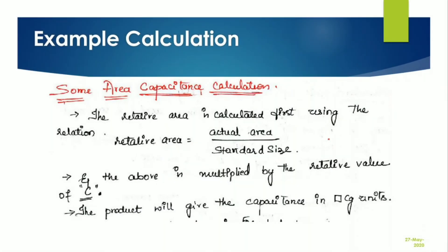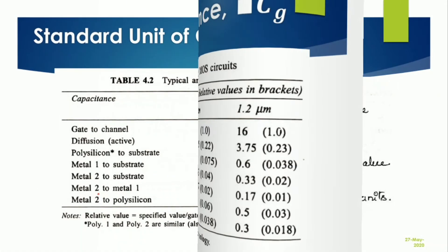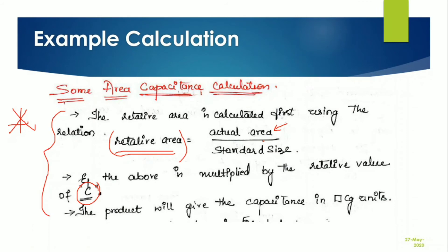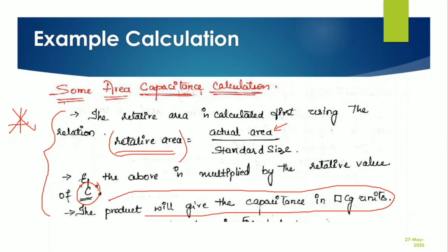To calculate capacitance, note three important steps. First, calculate the relative area as actual area divided by standard size. Second, multiply the relative area by the relative capacitance value from the table. Third, the resulting product has the unit of square CG.